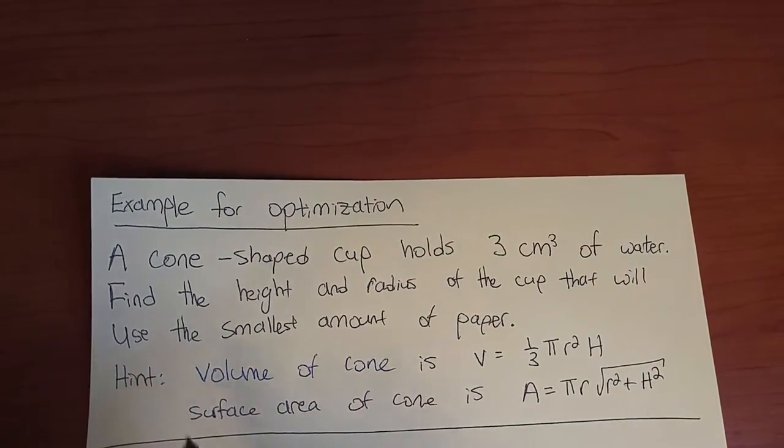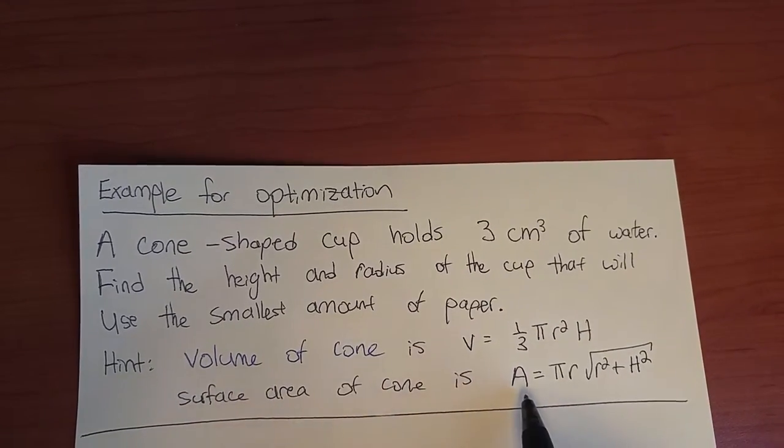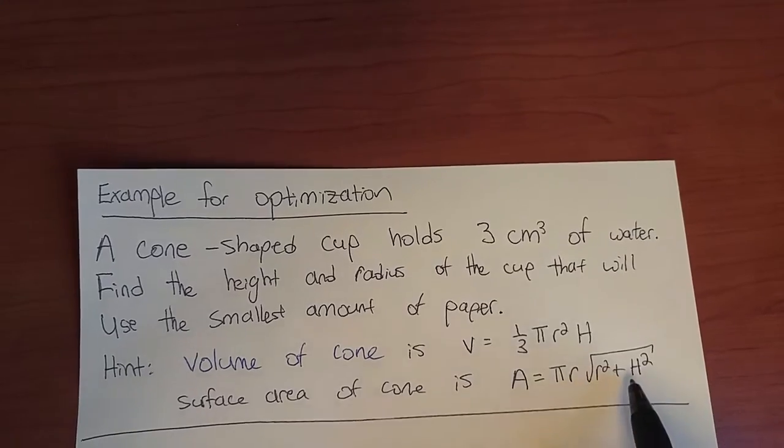The first hint is that the volume of a cone is V = ⅓πr²h, and the surface area of a cone is A = πr√(r² + h²).